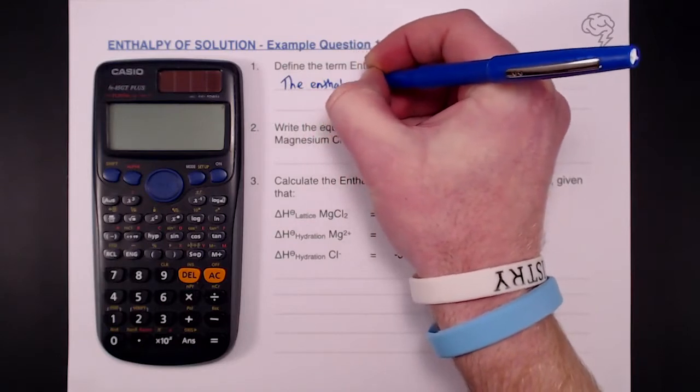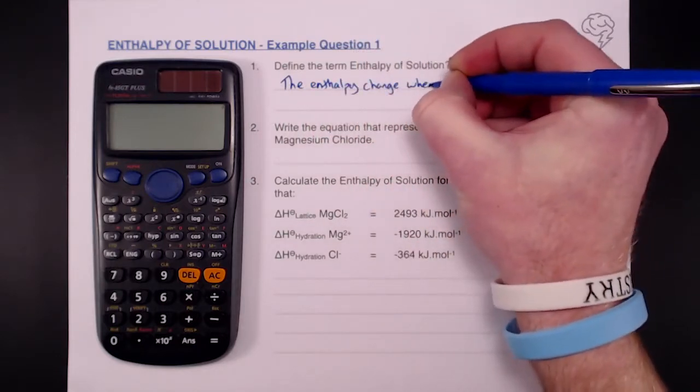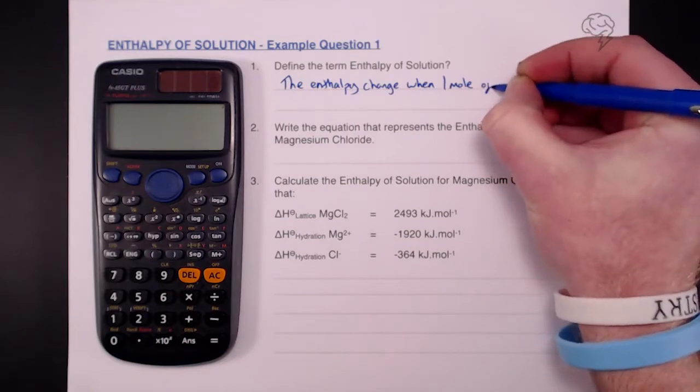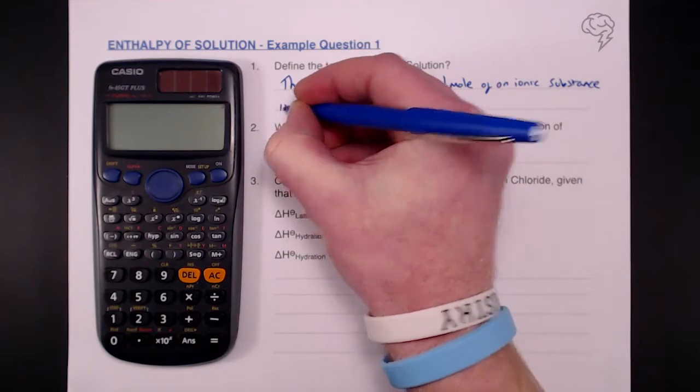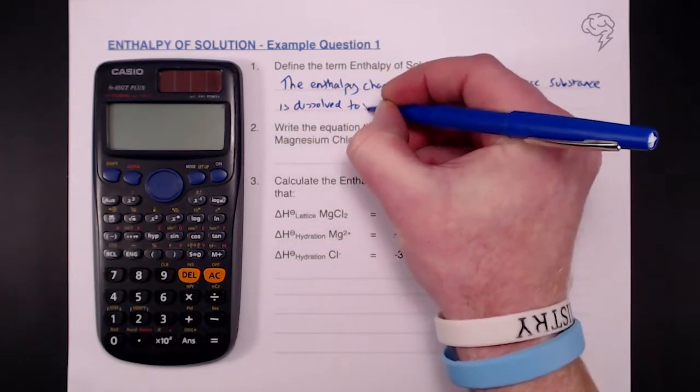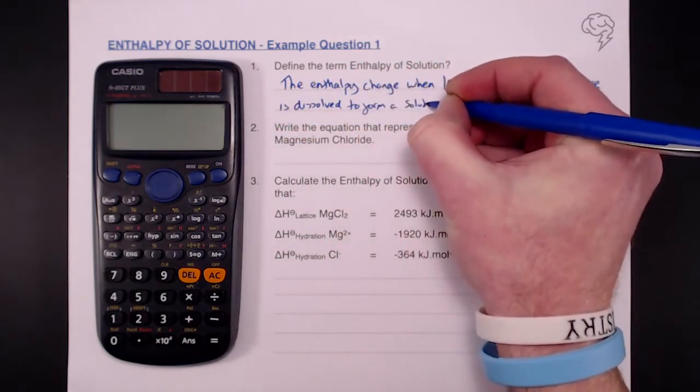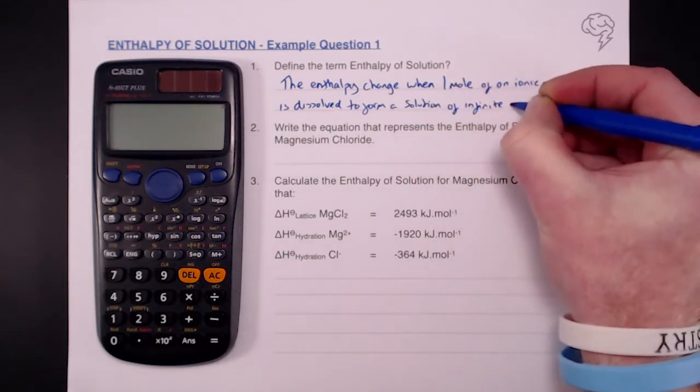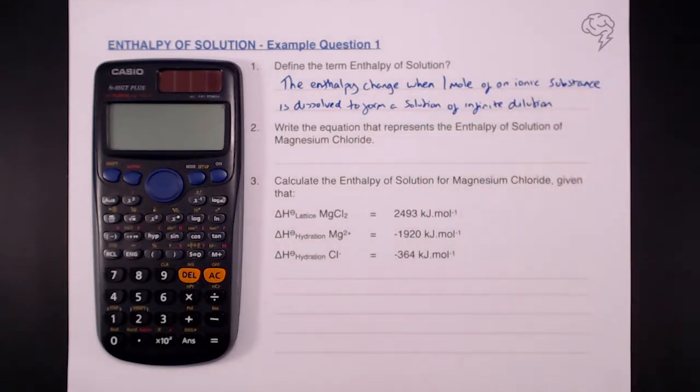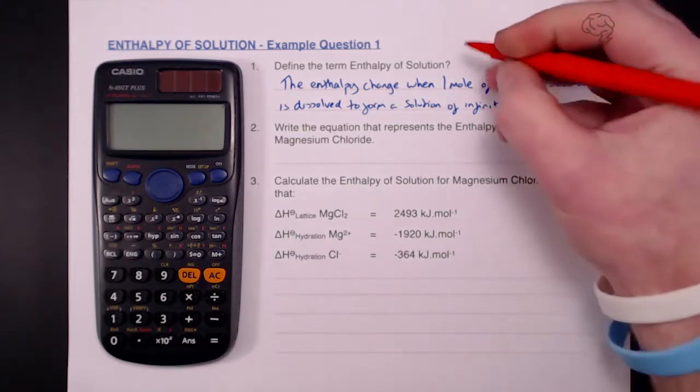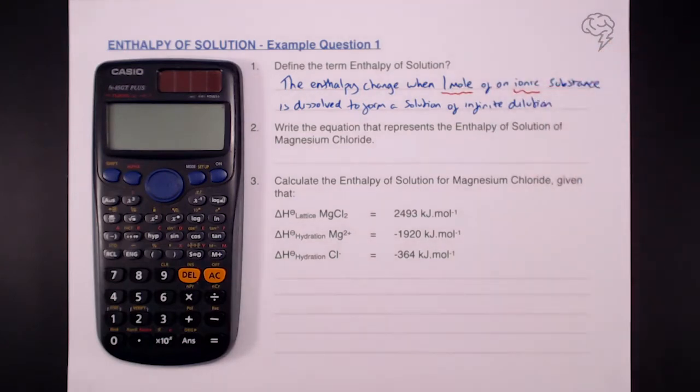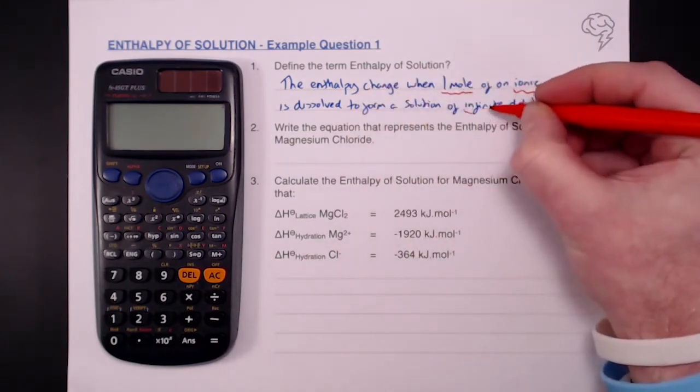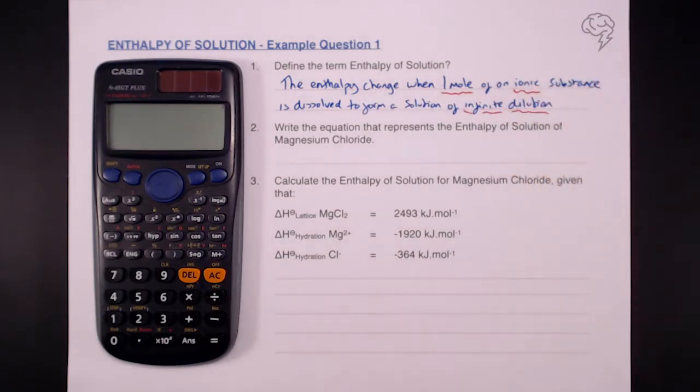The first question here is define the term enthalpy of solution. That's the enthalpy change when one mole of an ionic substance is dissolved to form a solution of infinite dilution. The important parts here are the fact that we're dissolving one mole of an ionic substance, which is dissolved to form a solution of infinite dilution. That's a really important aspect of that definition.